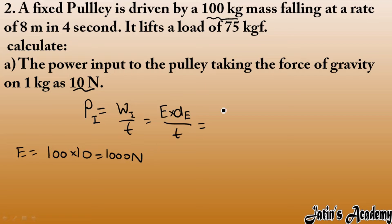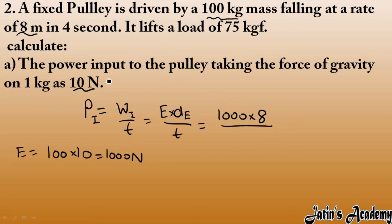So effort is 1000 newton. For a fixed pulley, displacement of load and displacement of effort are the same, which is 8 meters. Time is given as 4 seconds. So power = (1000 × 8) / 4 = 2000 watt, or 2 kilowatt.